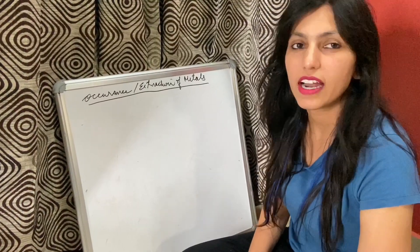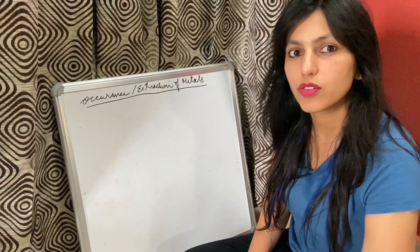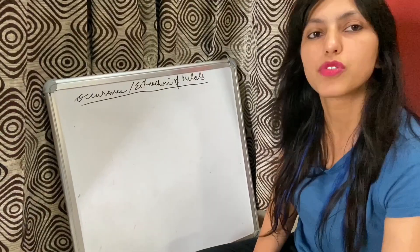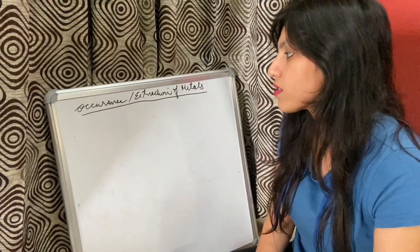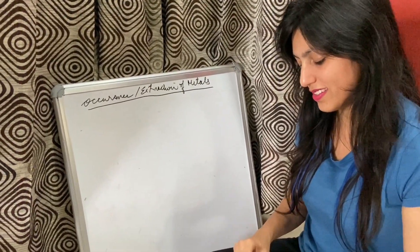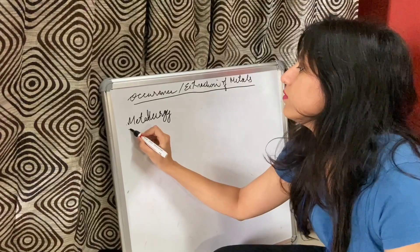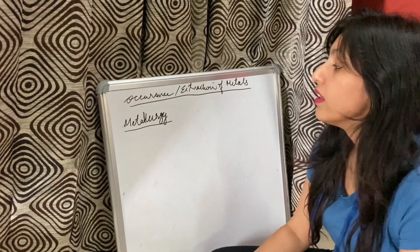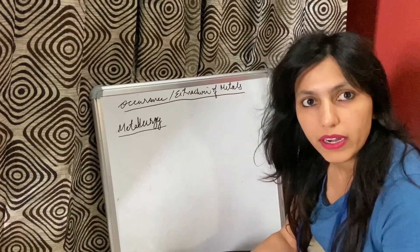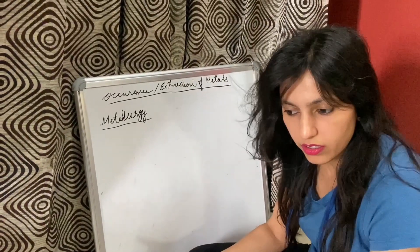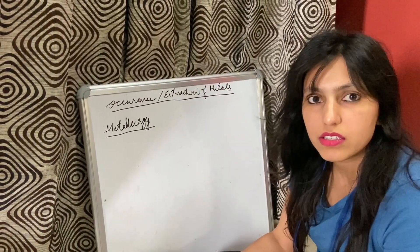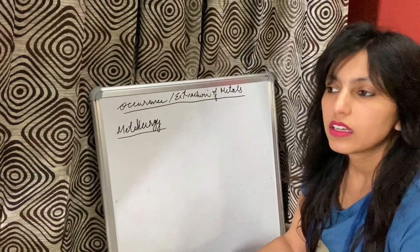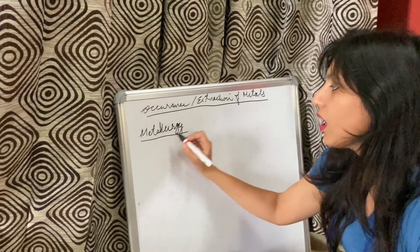Today we will be starting with the occurrence or the extraction of metals. Before that we should know some definitions. The first is metallurgy. Metallurgy is the science of metals — where metals are extracted from, their occurrence, and the impurities in the metals.